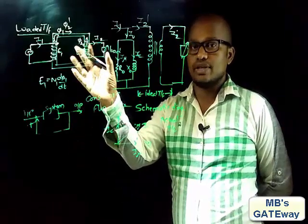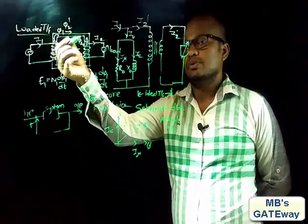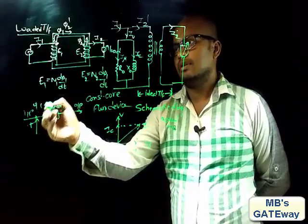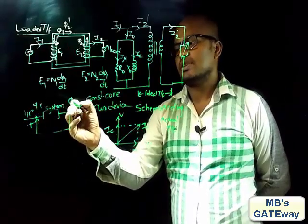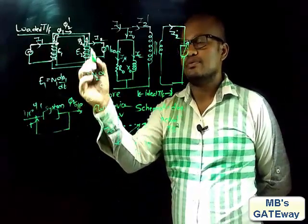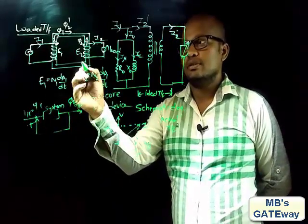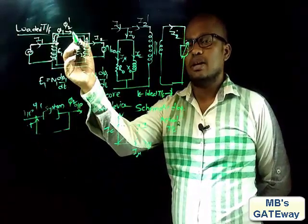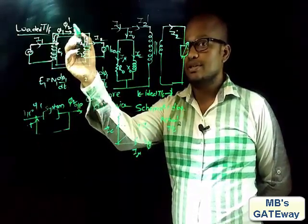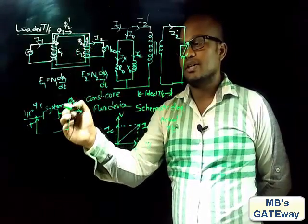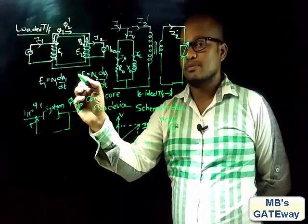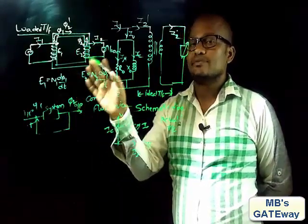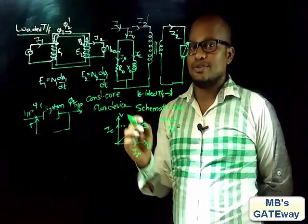Coming to the case of the transformer: the input is flux φ1, the output is flux φ2, and flux φ2 is fed back to the input. Since φ2 is decreasing φ1, this system falls under the negative feedback category. Therefore, a transformer can also be called a negative feedback circuit.